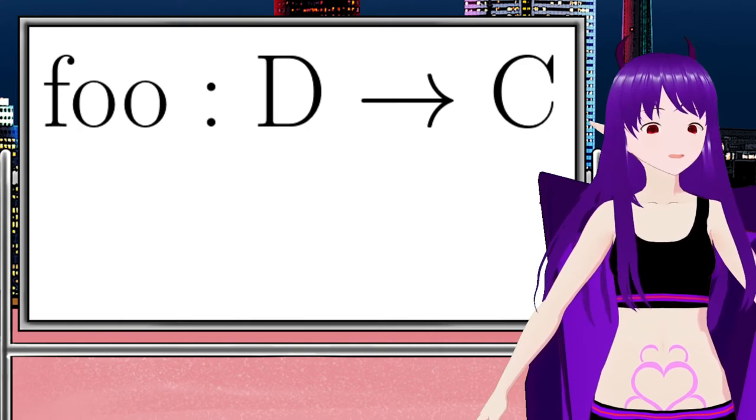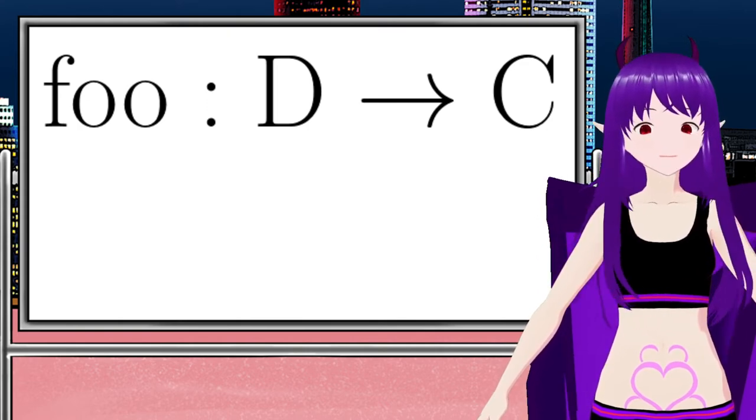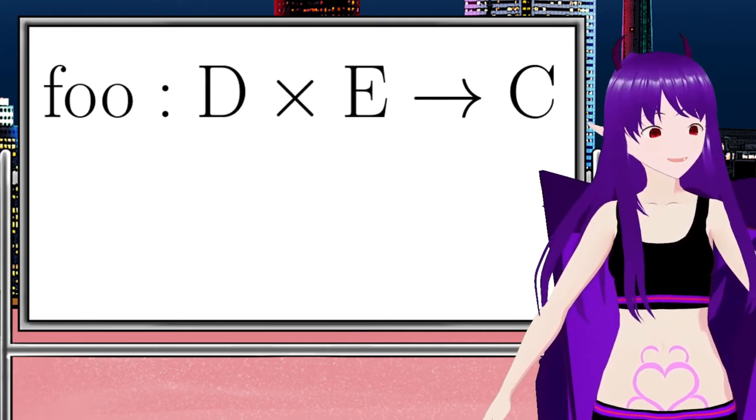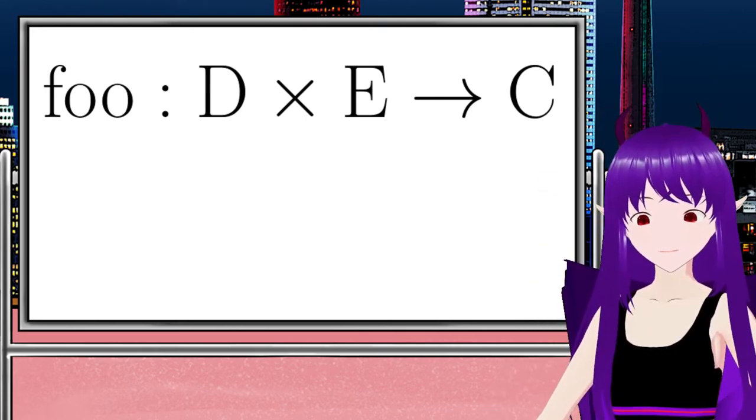What if we want to have a function that takes two arguments? Well, like a fanfic writer, we use pairs. Foo takes D cross E to C.